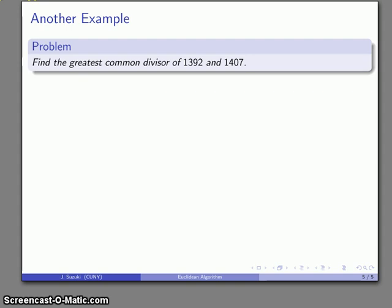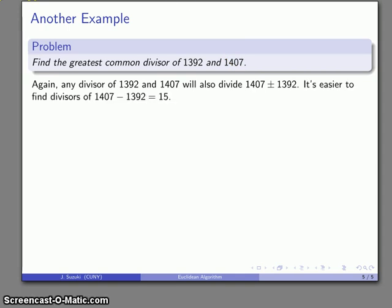Alright, so how can we use that? Well, let's consider the problem finding the greatest common divisor, 1,392 and 1,407. So again, by the preceding logic, anything that divides both will also divide their sum and also their difference. And again, their sum is a little bit more difficult to work with because it's a larger number, but their difference is pretty easy. It's 1,407 minus 1,392 is 15. So I can start by looking for things that divide 15. And it's useful to think about these things that divide 15 as candidates for the greatest common divisor. The greatest common divisor will be one of the things that divide 15, and we just have to figure out which one it is.